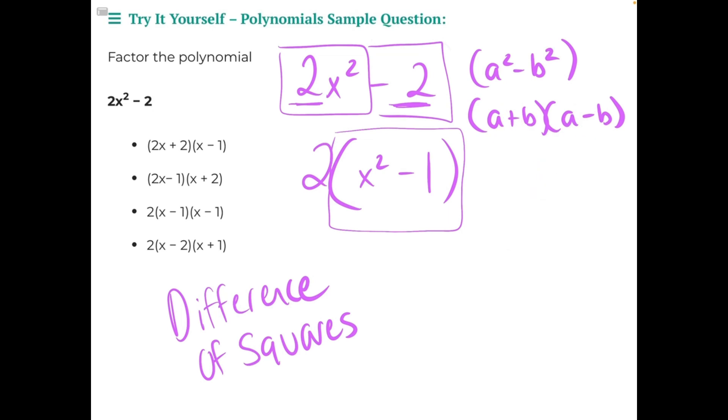So in order to factor this problem here, we need to leave our 2 on the outside of the parentheses, take our a, which is x, a plus b, which is 1, and then multiply it by x minus 1.